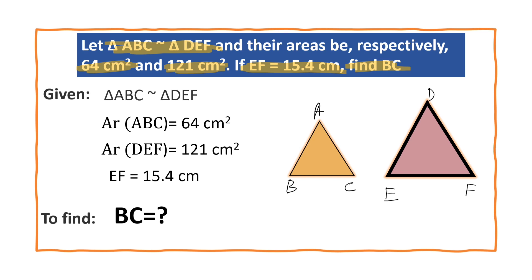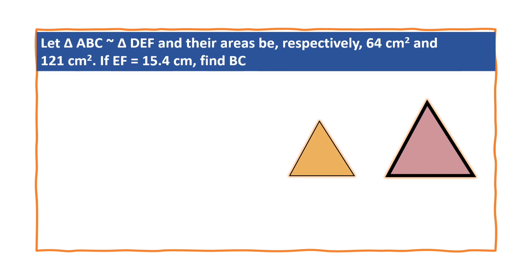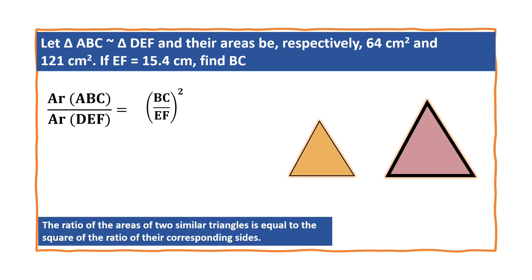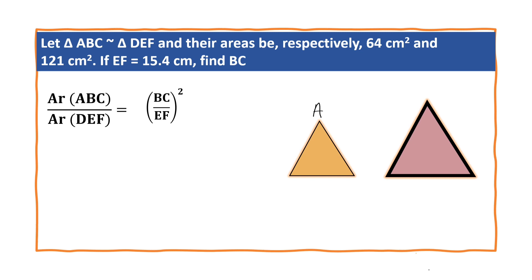Observe that BC and EF are the corresponding sides. Now we can write: area of triangle ABC upon area of triangle DEF is equal to (BC / EF) whole squared. The ratio of the areas of two similar triangles is equal to the square of the ratio of their corresponding sides. This triangle is ABC, this triangle is DEF.